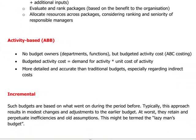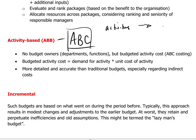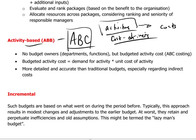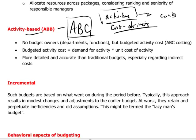Activity-based budgeting is derived from the ABC system — activity-based costing. Assuming the company has an ABC system in place and therefore knows the activities which drive costs — the cost drivers — it has a sophisticated understanding of which activities are generating costs. The budgeting can then be based on those activities; for example, how many times production runs need to be set up, knowing the cost implications of many runs versus fewer. It's a more sophisticated way of understanding and managing costs and budgeting for them.